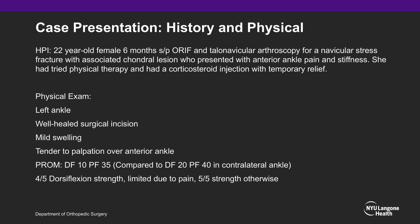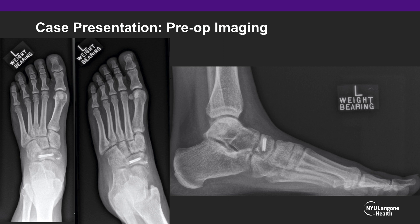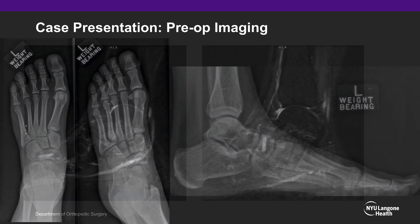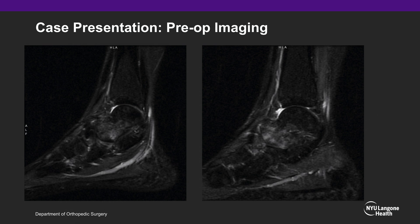This case involves a 22-year-old female, six months post-RAFT and talonavicular arthroscopy for a navicular stress fracture with associated chondral lesion, who presented with several months of anterior ankle pain and stiffness. She had tried physical therapy and had a corticosteroid injection with temporary relief. Preoperative plain radiographs showed a healed navicular stress fracture, and preoperative MRI showed a stress reaction within the talar neck as well as scar tissue in the anterior ankle joint consistent with anterior ankle impingement.